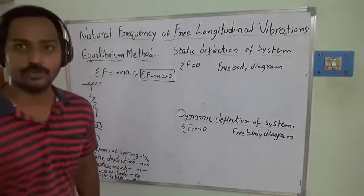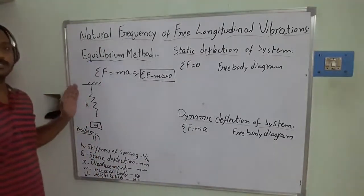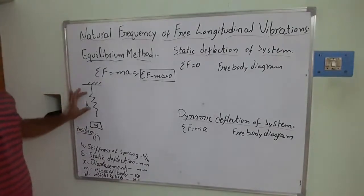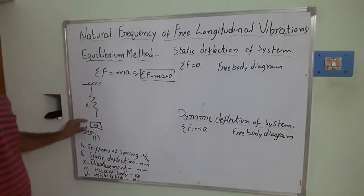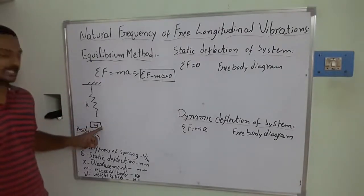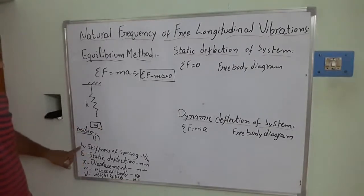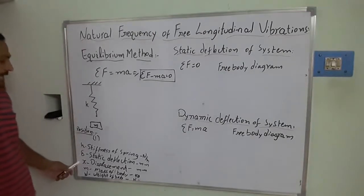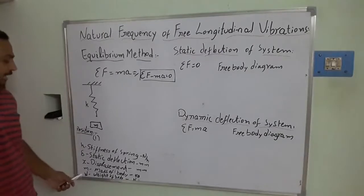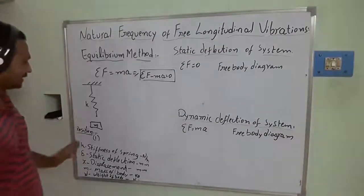From these equations, we are going to develop the equation of motion of the vibrations. I am taking a simple system: one spring with stiffness k, and a mass m. The terminologies are: k is the stiffness of the spring, δ (del) is the static deflection of the spring, x is the displacement of the spring, m is the mass of the body, and w is the weight of the body.